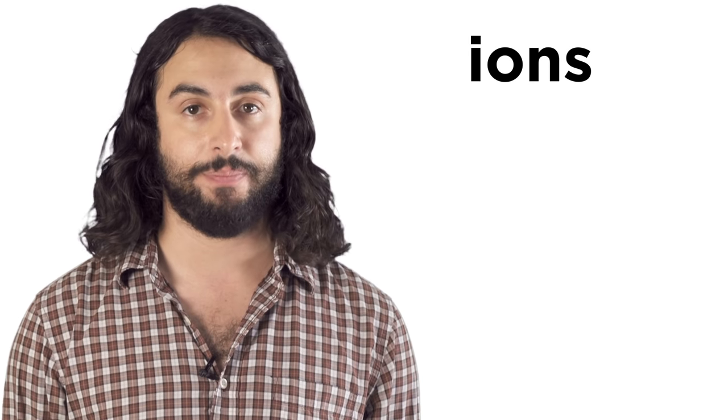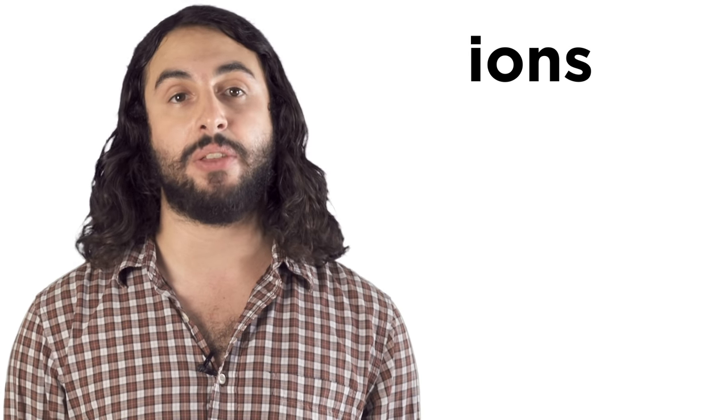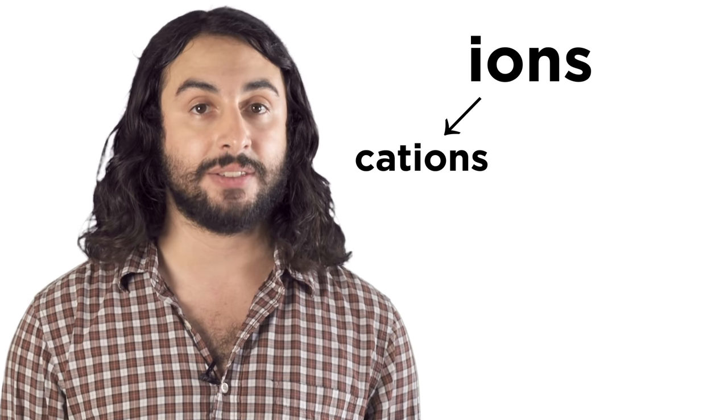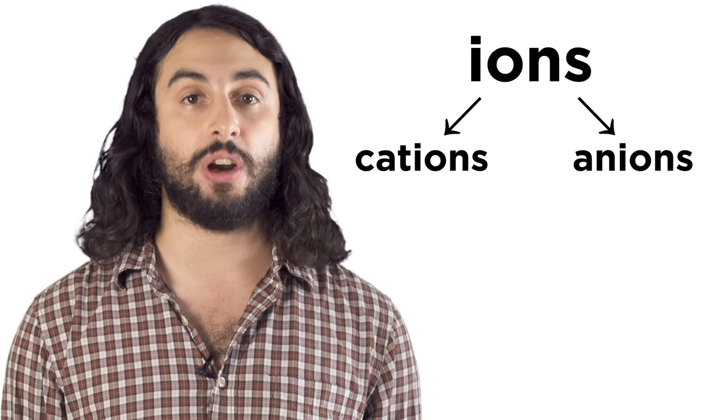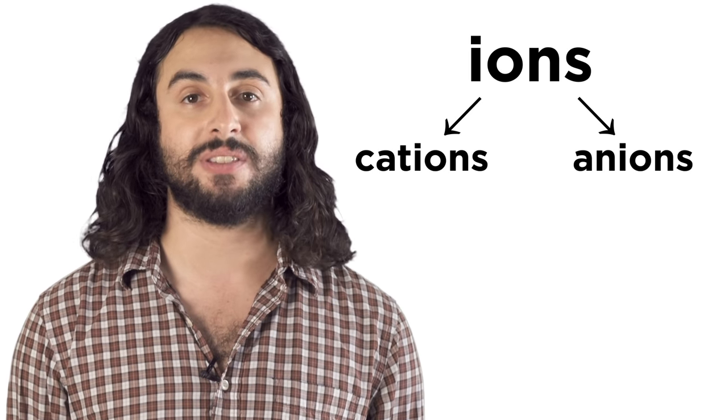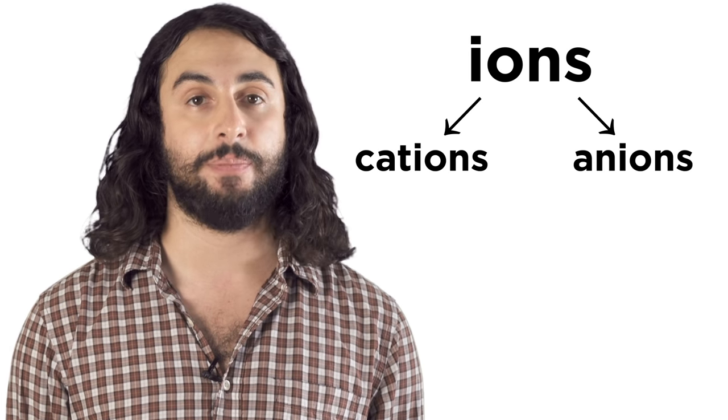As we just learned, sometimes atoms steal electrons from one another to become ions. There are many ionic substances and we should be able to name them, but first we must understand that ions come together to form compounds in ratios dictated by their charges. Positively charged ions, or cations, will bind with negatively charged ions, or anions, to form neutral compounds by whatever combination is necessary.